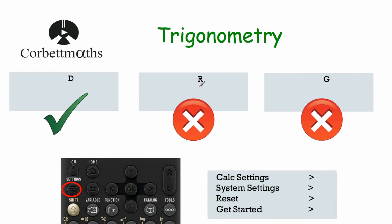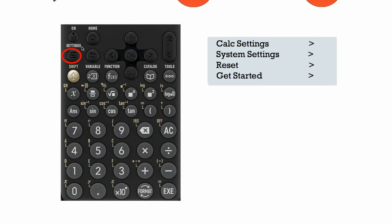If you do have any brothers or sisters who do A-level maths, their calculators will regularly have an 'r' at the top as they use radians quite a lot. So if you're using an older brother or sister's calculator and they do A-level maths, it can be quite useful to make sure you know how to change it to have a 'd' at the top. So let's have a look and see how we do that.